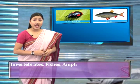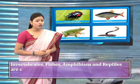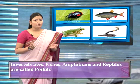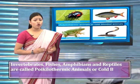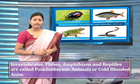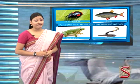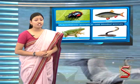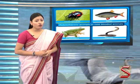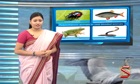In vertebrates, fishes, amphibians, and reptiles are called poikilothermic animals or cold-blooded animals. In these animals, the body temperature changes according to atmospheric temperature.